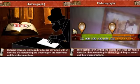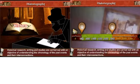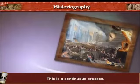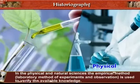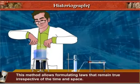Here I explain some points on your screen with the help of some pictures. Historical research writing and studies are carried out with the objective of understanding the chronology of past events and their interconnections — this is a continuous process. In the physical and natural sciences, the empirical method — laboratory method of experiments and observation — is used to verify the available knowledge. This method allows formulating laws that remain true irrespective of time and space.